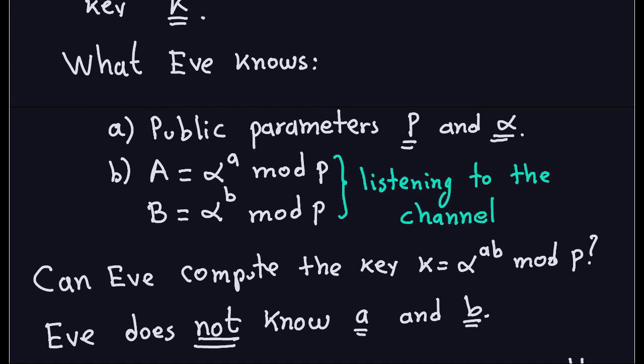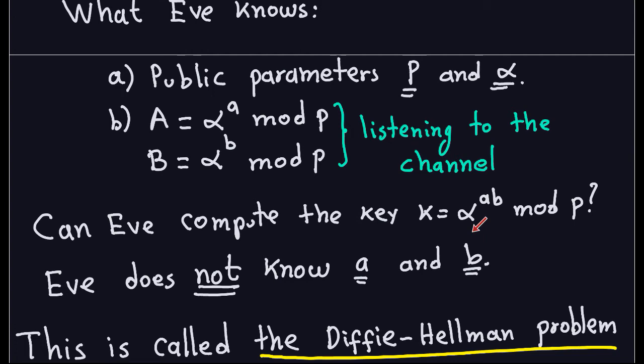So the question is: if Eve knows these four pieces of information — P, alpha, capital A, and capital B — can she compute the shared key, which is alpha to the ab modulo P? Would that be possible?